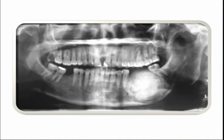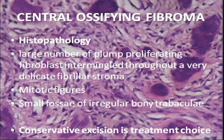Coming to the histopathological aspects, a key feature is the presence of mitotic figures. We will be seeing many mitotic figures in central ossifying fibroma. Normally, there are large numbers of plump proliferating fibroblasts intermingled throughout a delicate fibrous stroma. We will also see small foci of irregular bony trabeculae. The treatment of central ossifying fibroma is conservative excision.